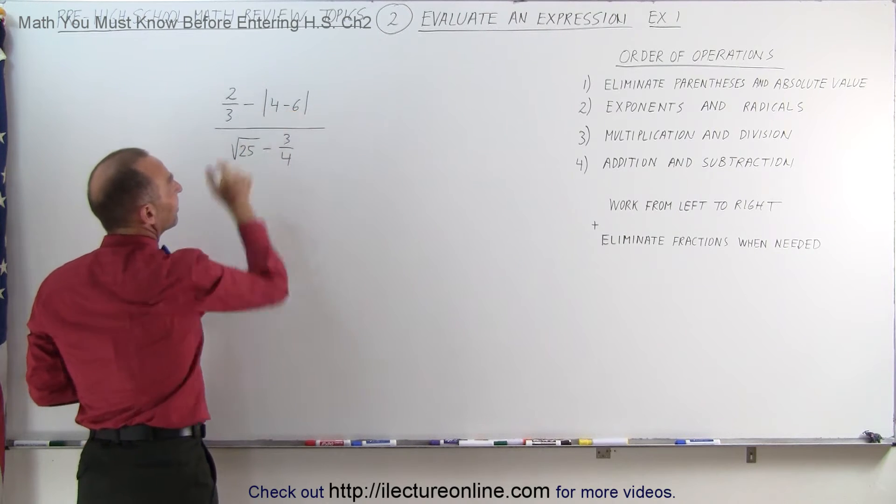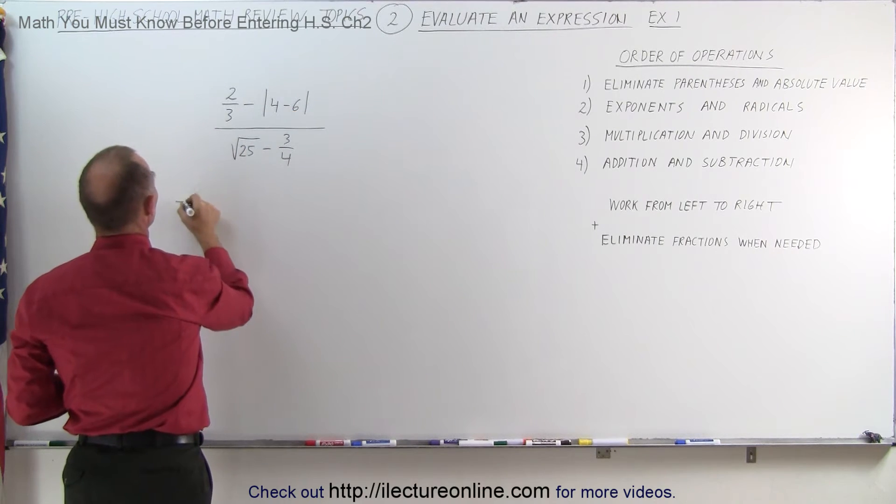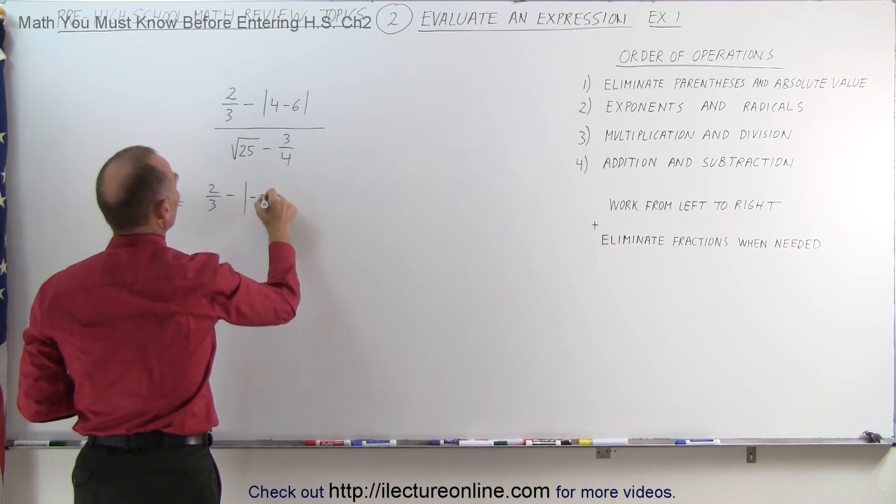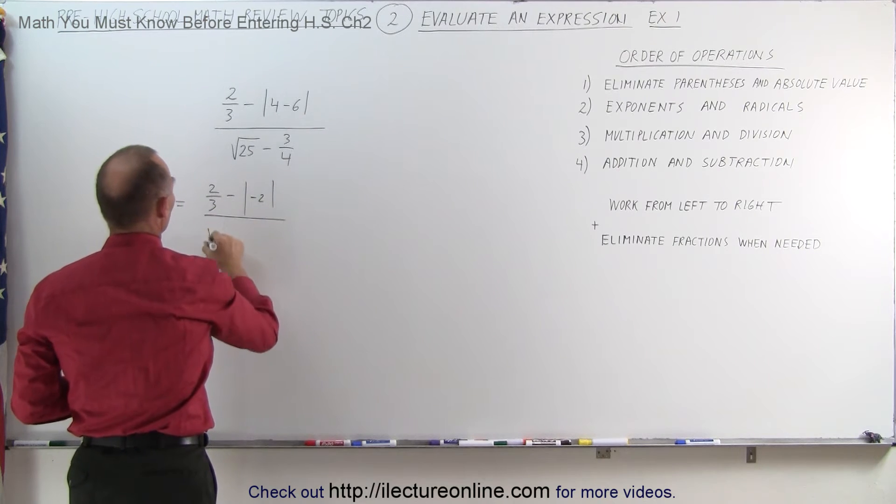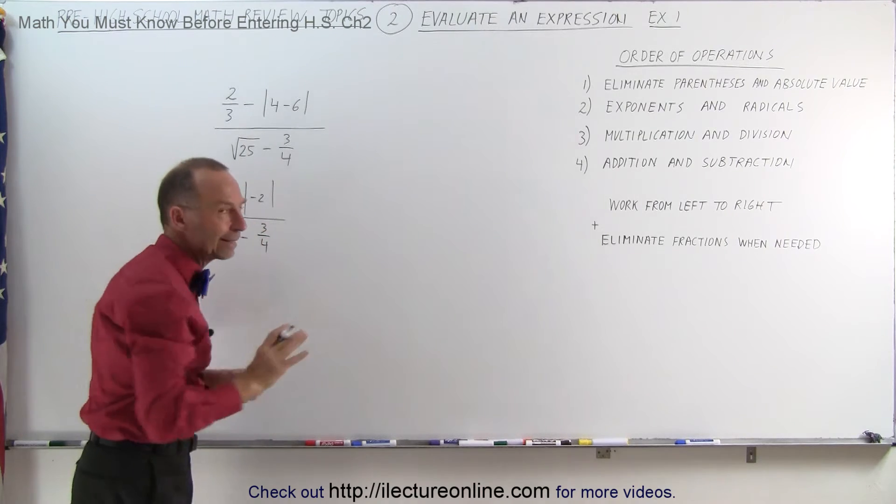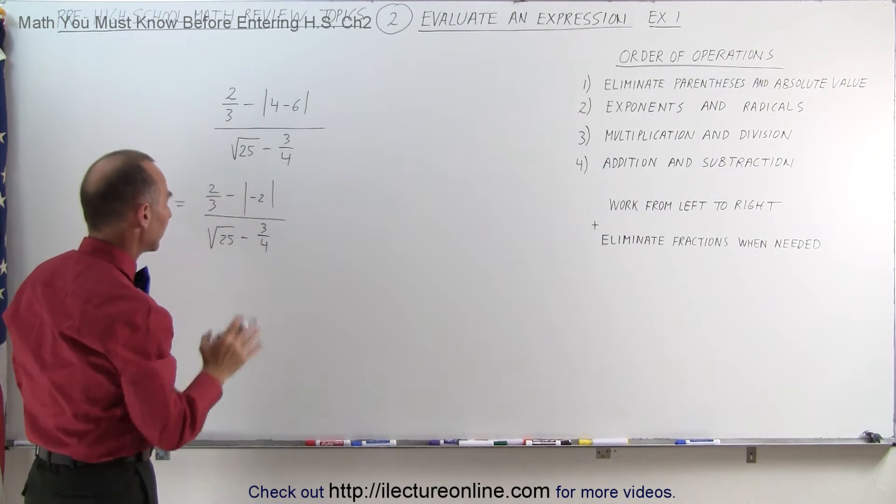Let's work out what's inside of that. So this becomes equal to 2/3 minus the absolute value of 4 minus 6, which is -2, divided by the square root of 25 minus 3/4.